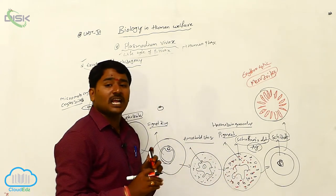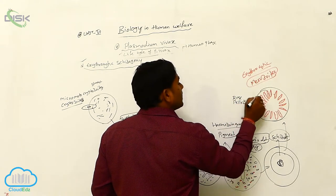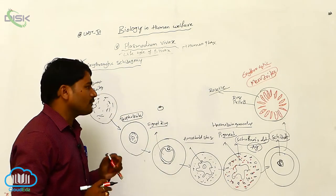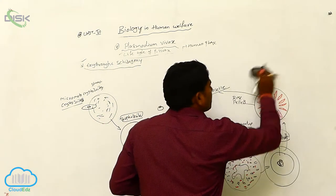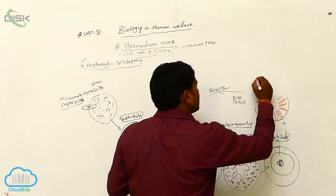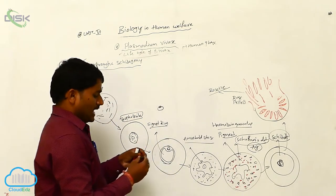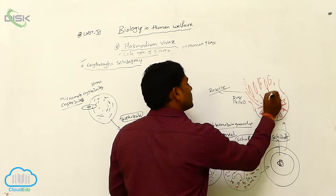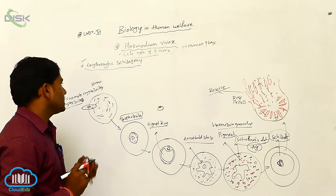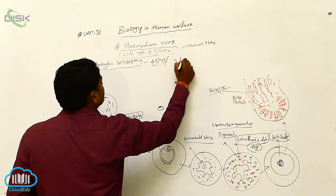These 12 to 24 merozoites are arranged like rose pellets. This stage is called as Rosette stage. After the Rosette stage, the RBC wall undergoes disruption. The merozoites are released outside from the RBC into the circulatory system. Along with these, Schaffner's dots and hemozoin granules are also released. This erythrocytic schizogony is completed in 48 hours, otherwise 2 days.